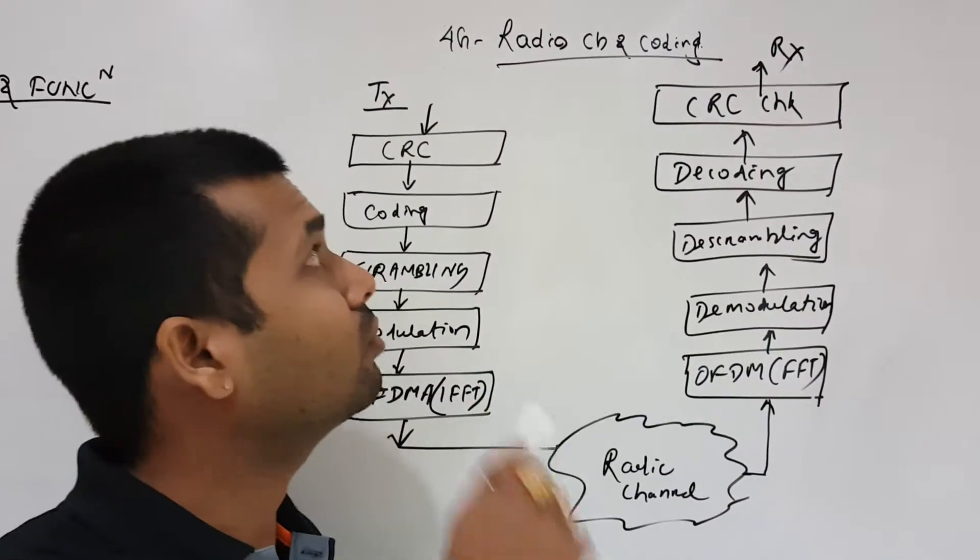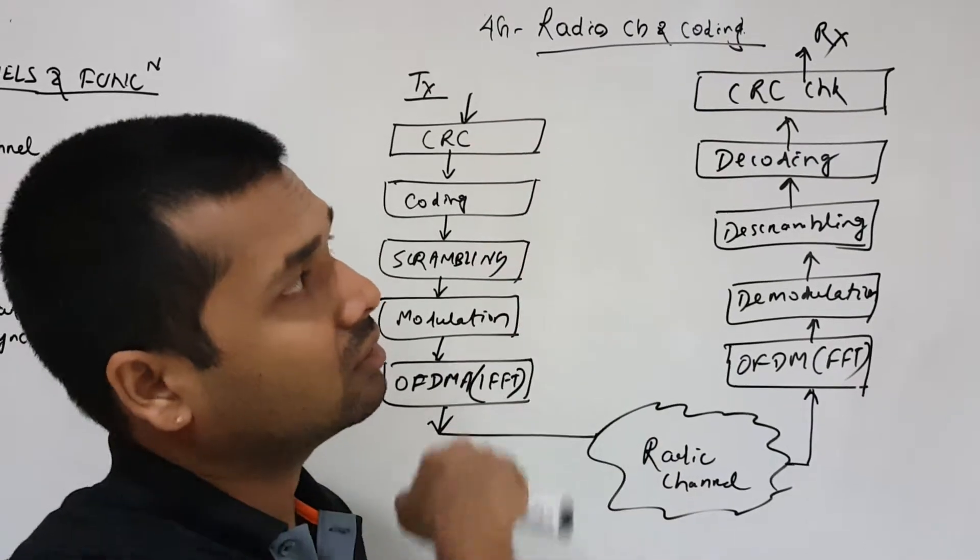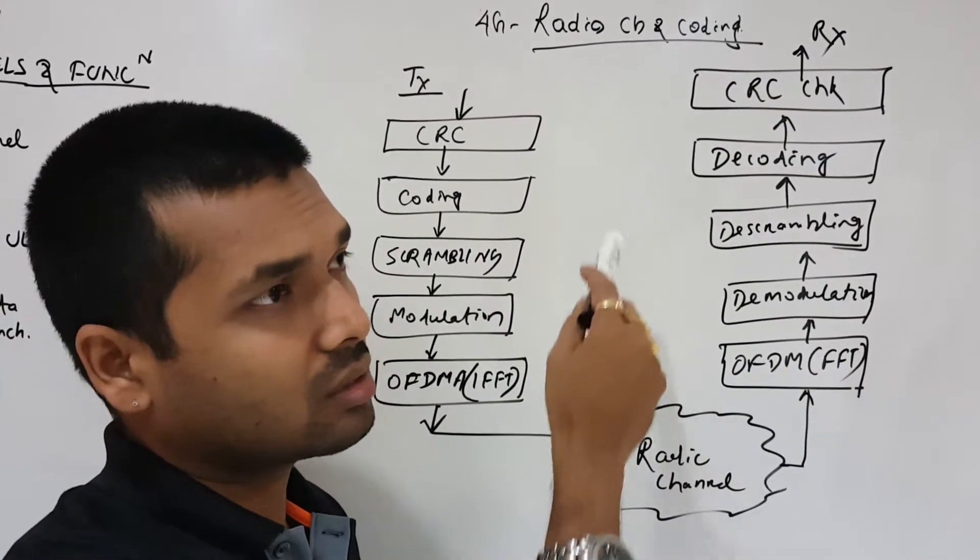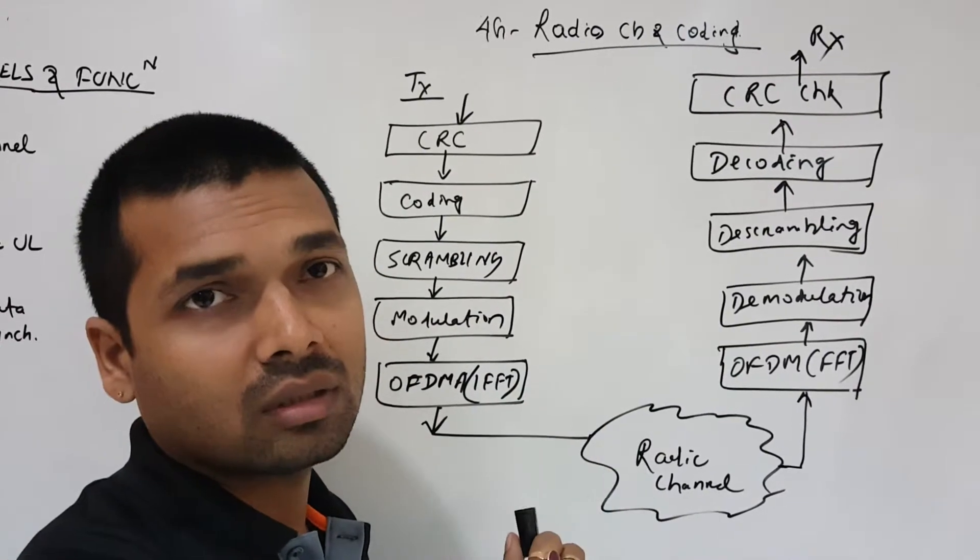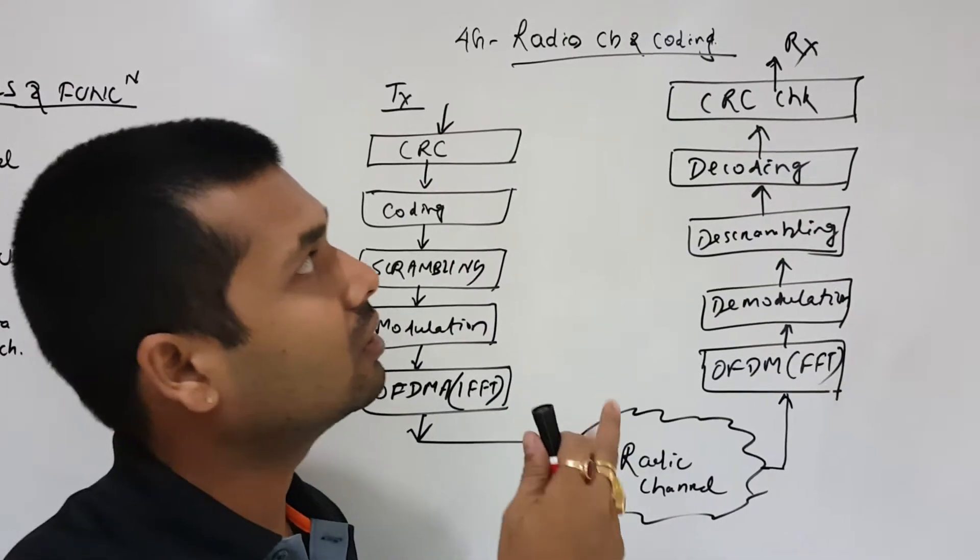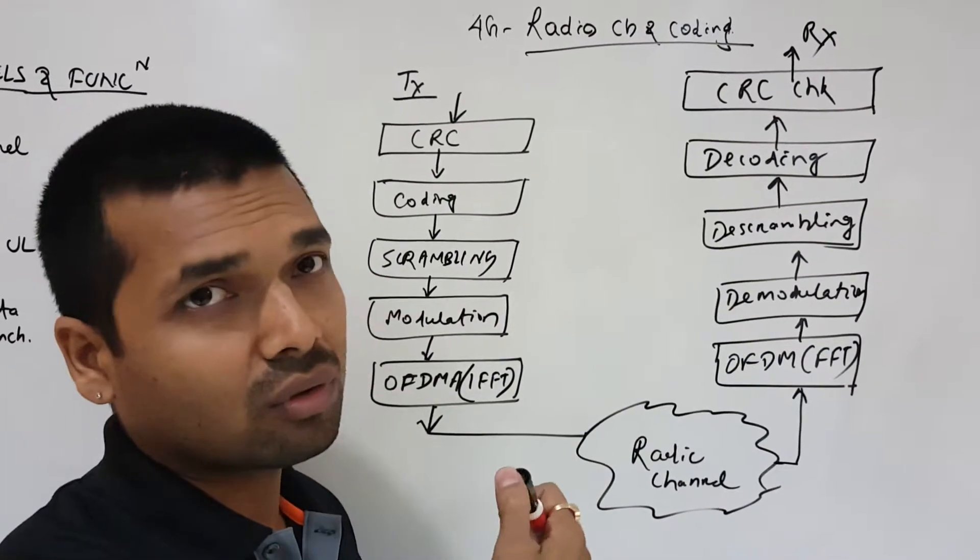Normally, how the radio channel works from the eNodeB and how we receive the data. Overall, let's take a look at how the transmission and reception happens in 4G, so we'll have a basic idea moving forward.